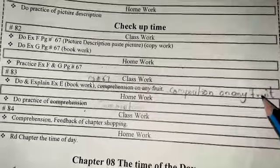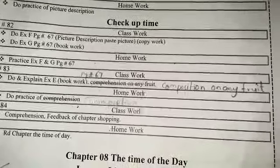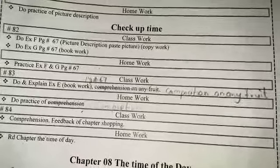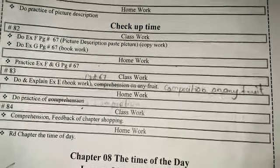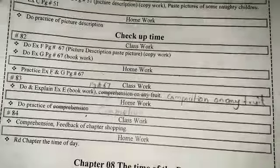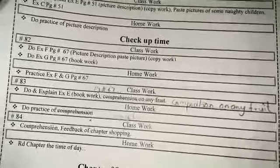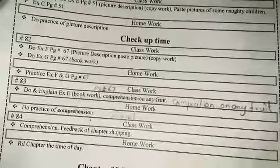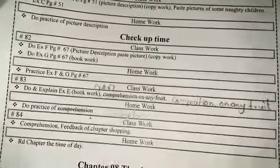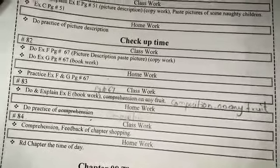You should write 5 to 6 sentences for your composition on any fruit. If you like a fruit, you will write about it. You will mention the color or the season. If you have a favorite fruit, you will include that. You can write a composition on any fruit.